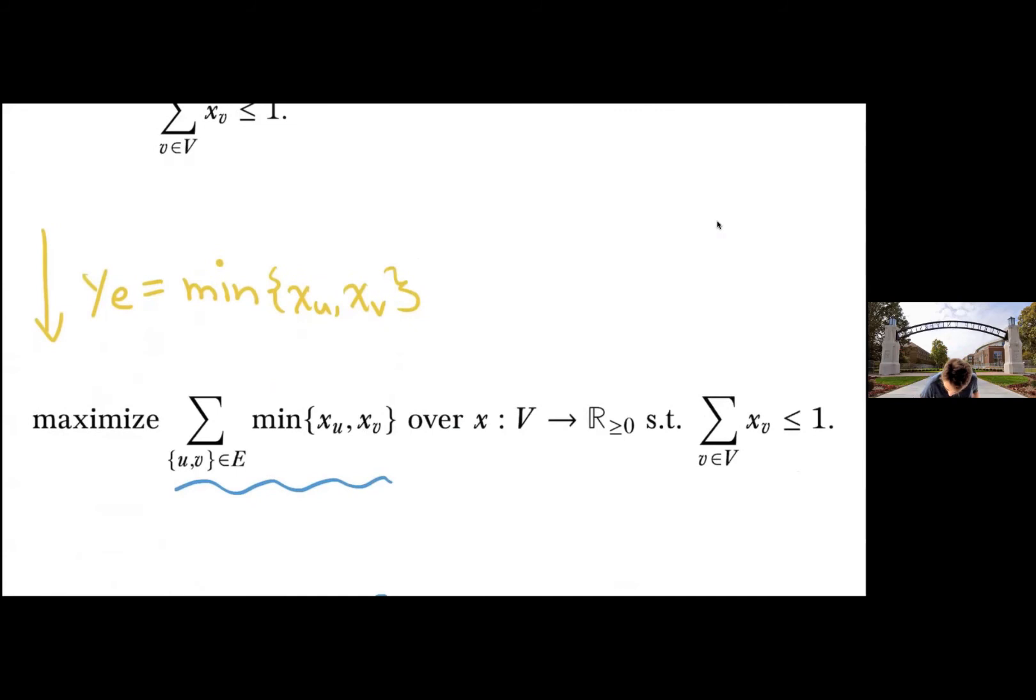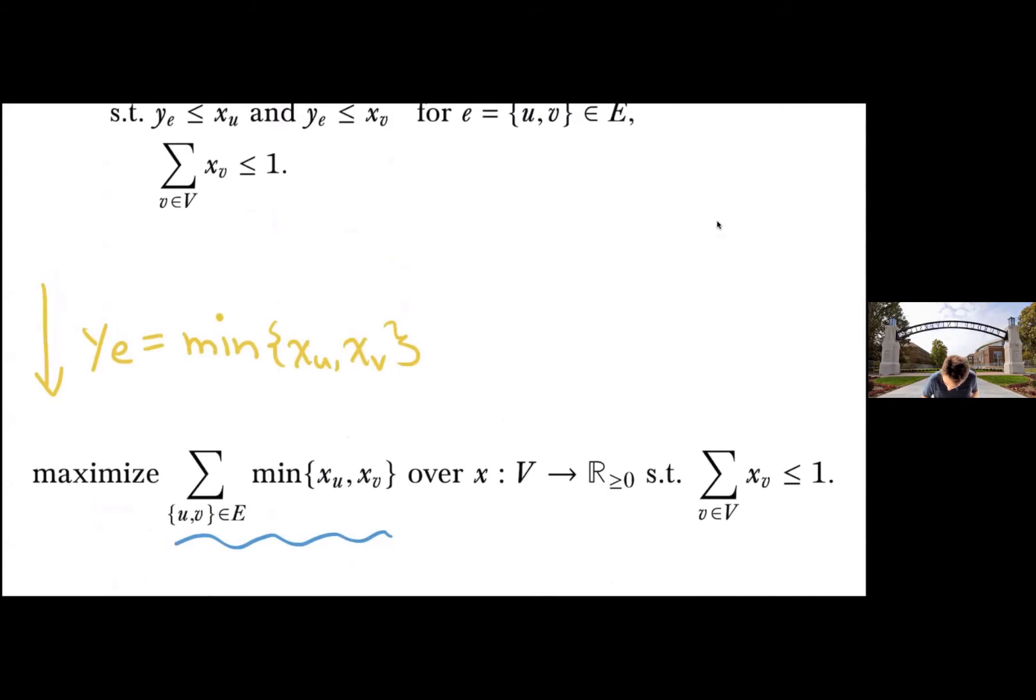So if we inline this choice, then we're left with maximizing the min of the two endpoints over all vertex weights that sum to one. And now the question is, how do we interpret this sum?